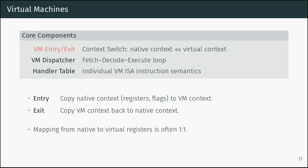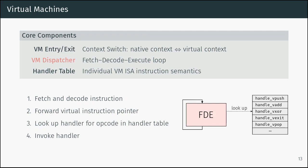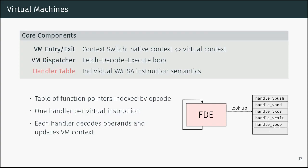A VM basically consists of different components. We have VM entry and VM exit. At some point, we leave our native code and jump into the VM code — there's a context switch, and the entry copies the native context such as flags and registers to the VM context. At some point we have a VM exit that restores the native context. We also have a VM dispatcher — this is just a software CPU, a fetch-decode-execute loop. We fetch an instruction, forward the virtual instruction pointer, look up the next instruction in a handler table, and execute the handler.